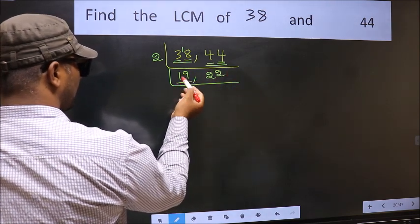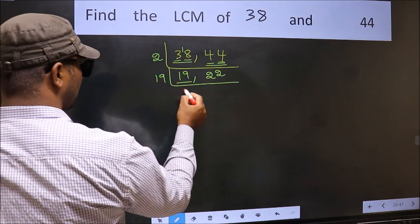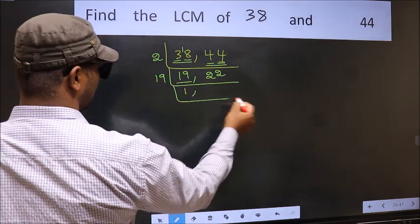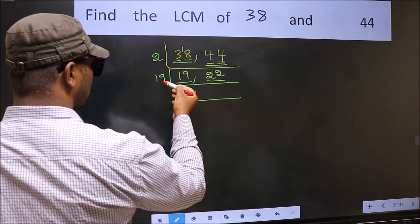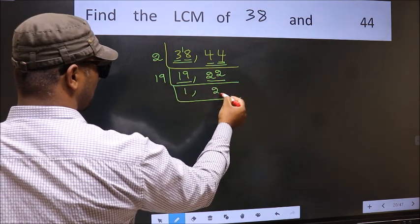Now here we have 19. 19 is a prime number, so 19 times 1 is 19. The other number 22 is not divisible by 19, so we write it down as it is.